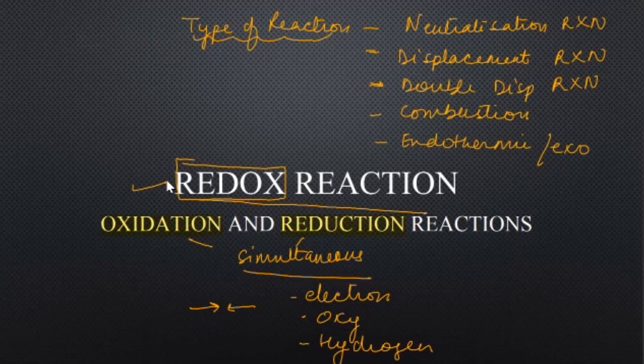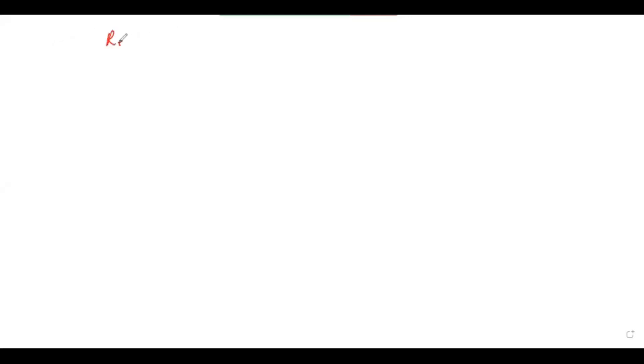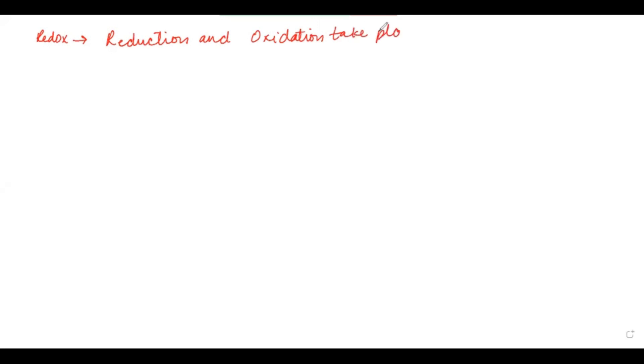These reactions are known as redox reactions, which come under the category of types of reactions. We basically have three to four definitions of redox reaction. Redox reactions are basically where reduction and oxidation take place simultaneously.